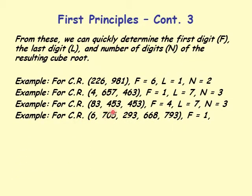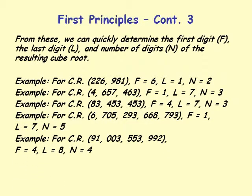For the cube root of 6,705,293,668: counting the blocks — 1, 2, 3, 4, 5 — so n = 5. The leading digit 6 is between 1 and 8, so the first digit is 1, and the last digit is 7. For cube root of 910,033,553,992: 4 blocks, so n = 4. The leftmost block is between 64 and 125, so the first digit is 4. The number ends in 2, so the last digit is 8. Number of digits is 4.